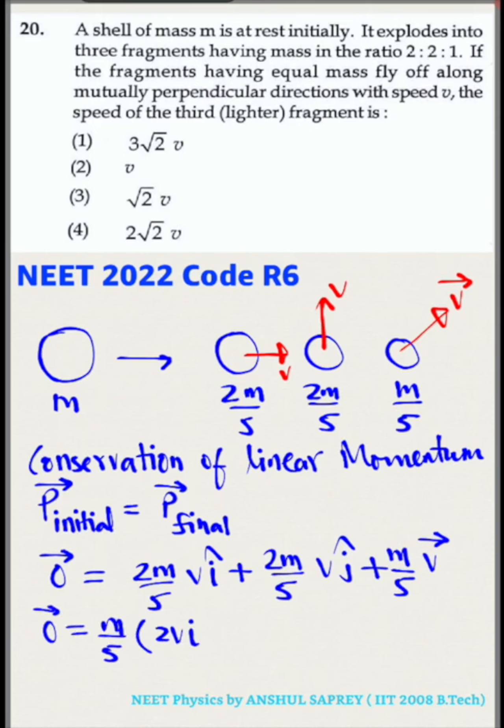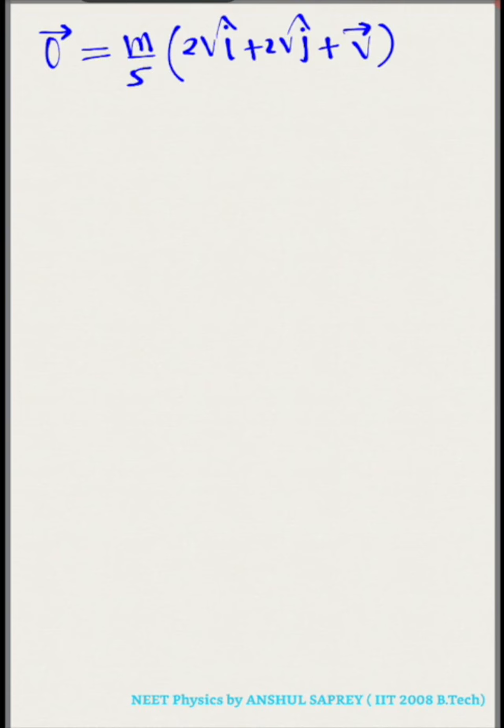Take m/5 to the other side, it will become zero. So 2v î + 2v ĵ + v vector is equal to zero. Therefore, v vector is equal to -2v î - 2v ĵ.